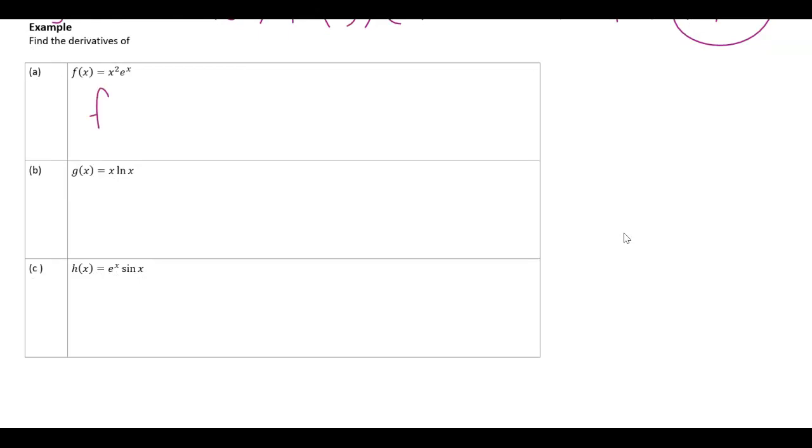All right, let's keep it going. So if I need to find these derivatives, f prime, derivative of the first would be 2x times leave the second alone plus the first times the derivative of the second.